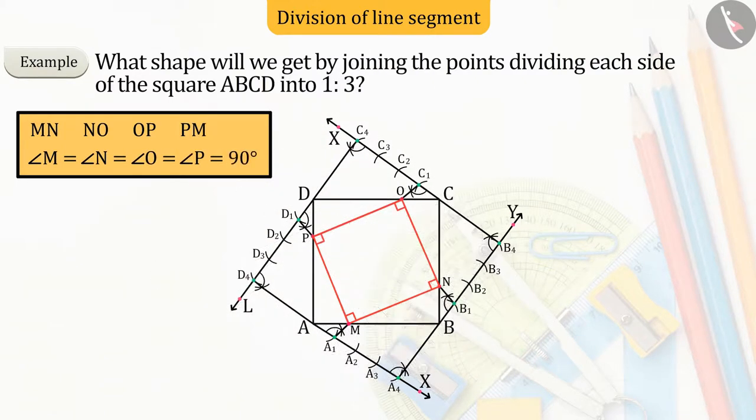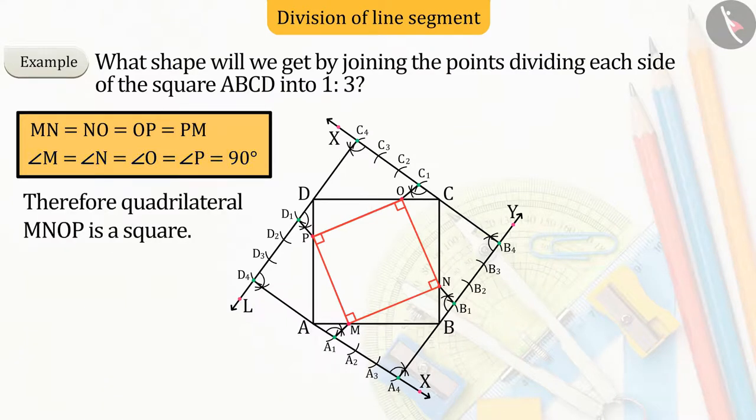We find that all sides of this quadrilateral are equal, and all angles measure 90 degrees. Hence, quadrilateral MNOP is a square.